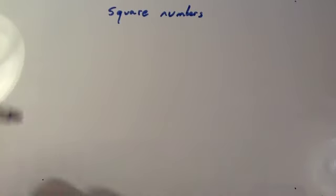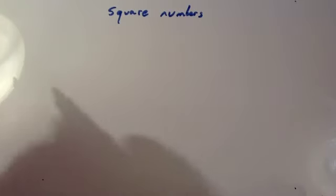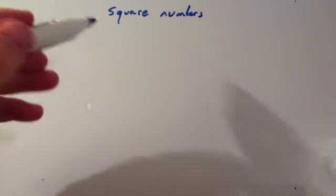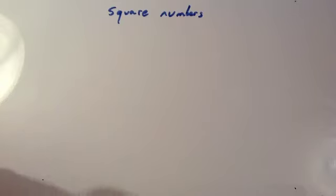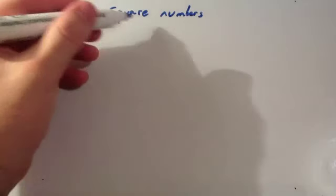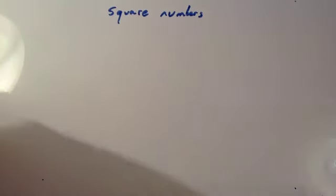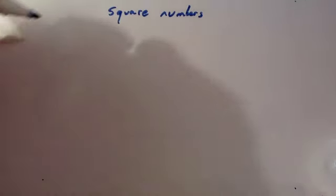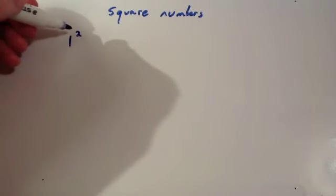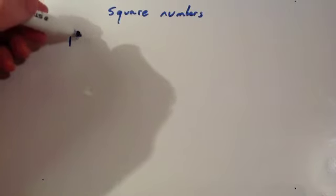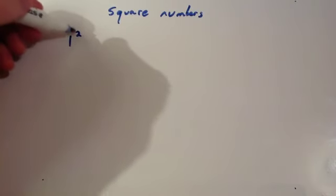We're now going to look at square numbers and squaring numbers. To find the square numbers, what you do is you square every single number. Now, this word square means to multiply it by itself. So, if I wanted to do 1 squared, this little superscript 2 means squared, or to square it.